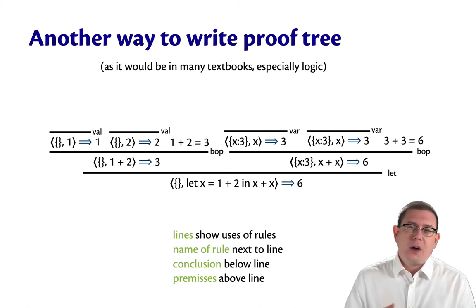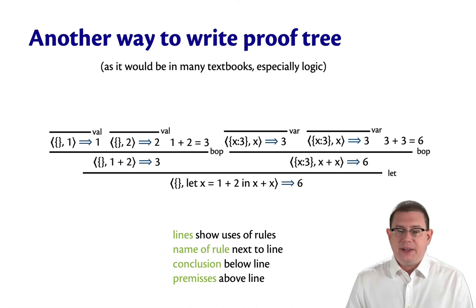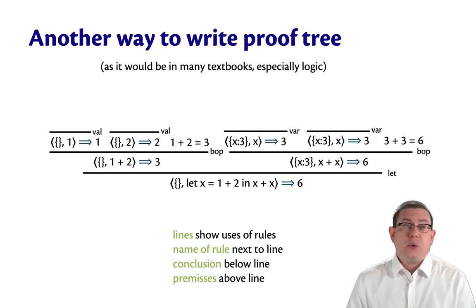Here, we've kind of gotten rid of nodes and edges, and instead we have lines. So the lines here each show the use of a rule from our semantics, whether it's the variable rule or the binary operator rule or whatever.